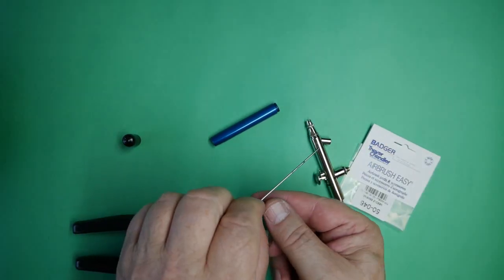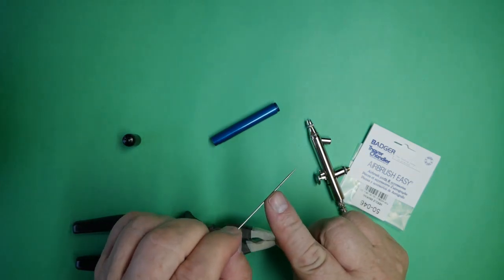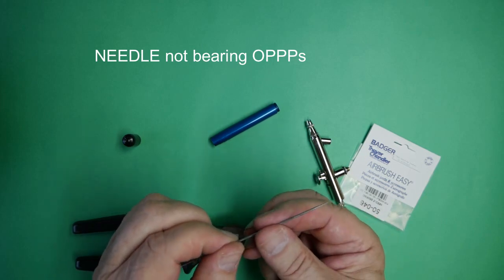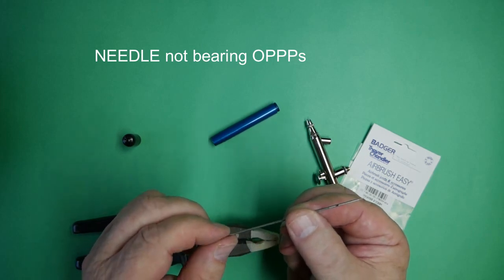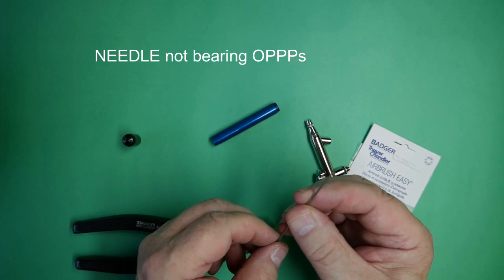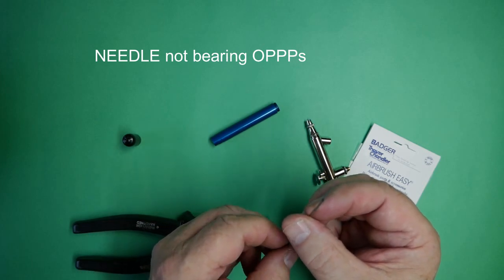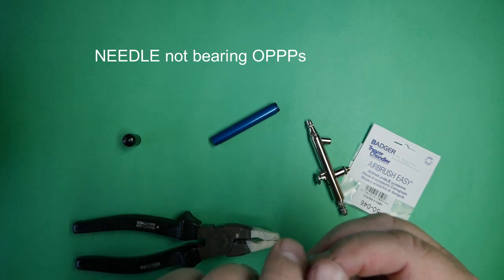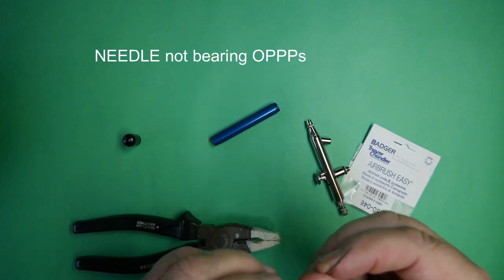As we can see there is a lot of dried paint down the bearing. Other than that, the needle has been straightened at some point because it has got a kink in it.